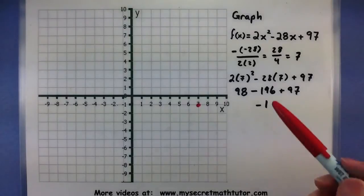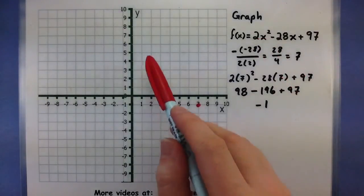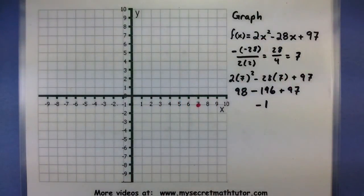Now according to my a value, this is positive, so I know that it is facing up. Now, normally I'd want another point on here too, and I could look at my y value to help me out. Unfortunately, my y intercept is not going to be very helpful, and we can see it's basically off my chart. It's way up there at 97.